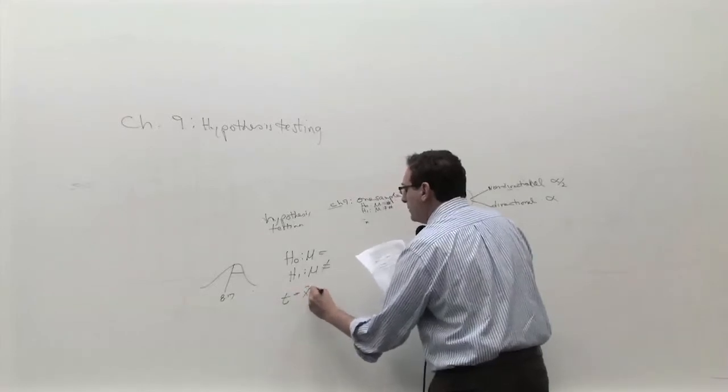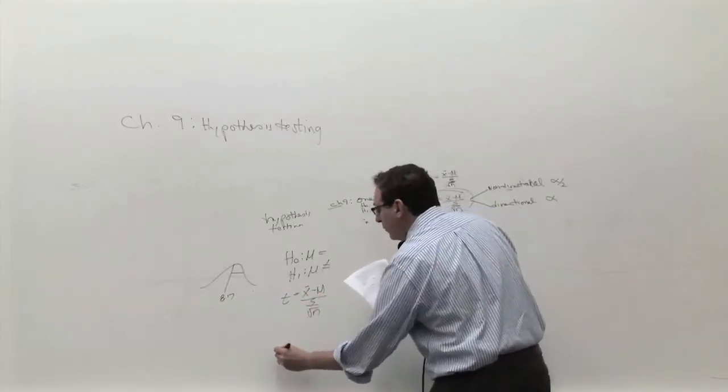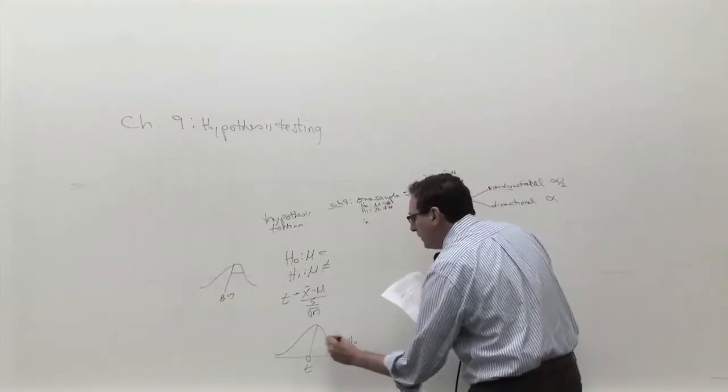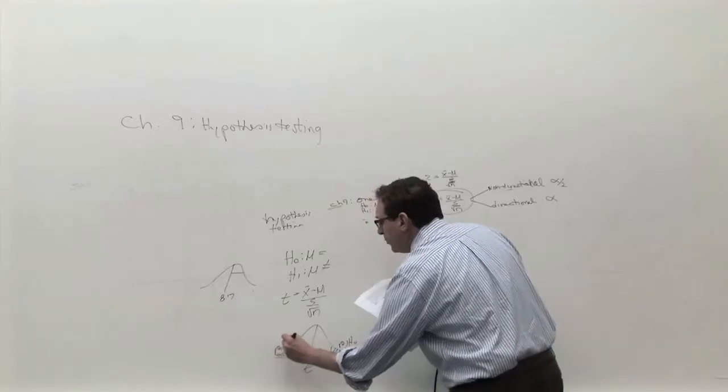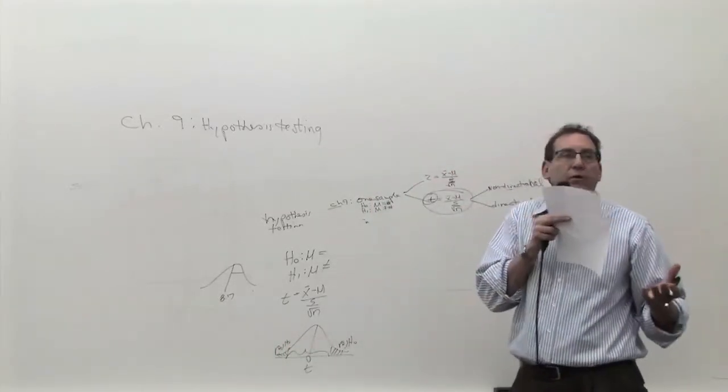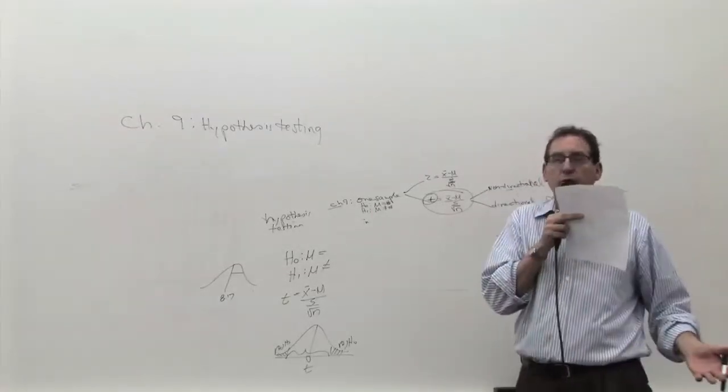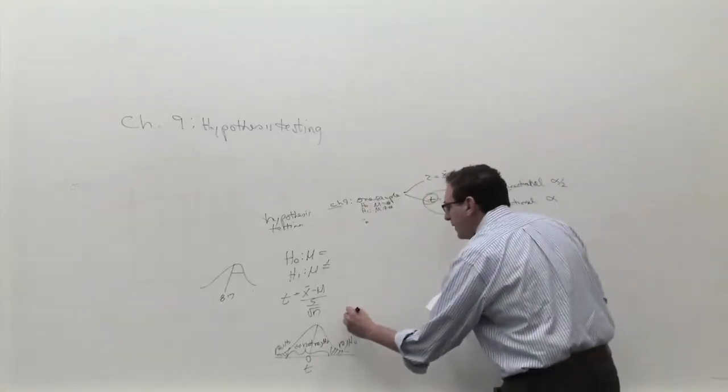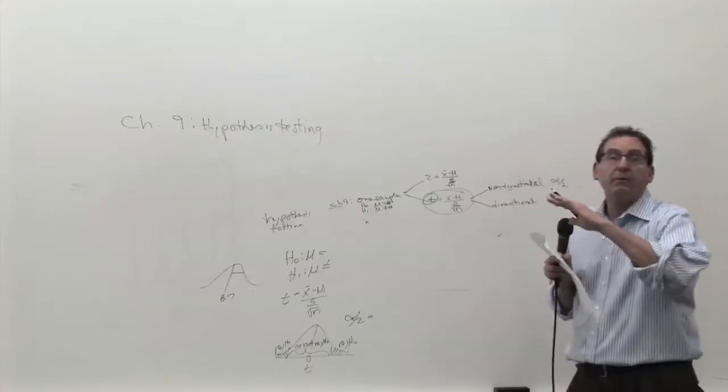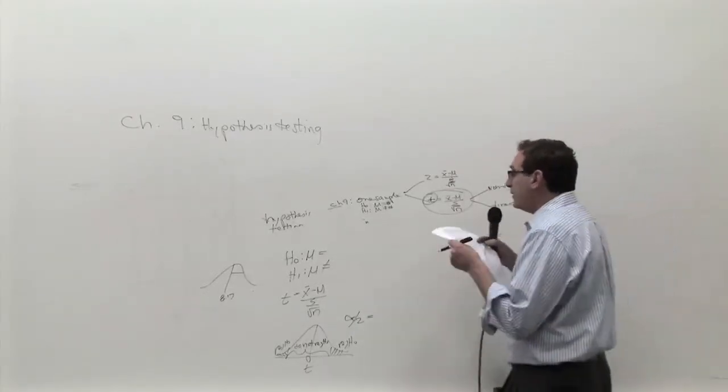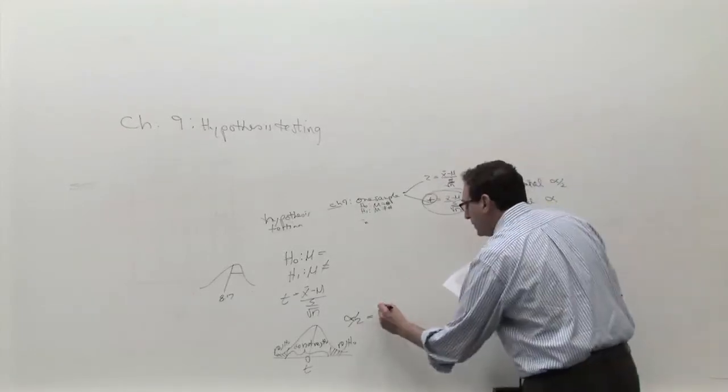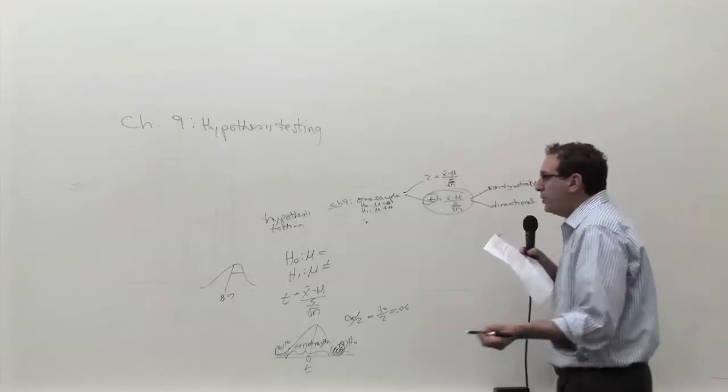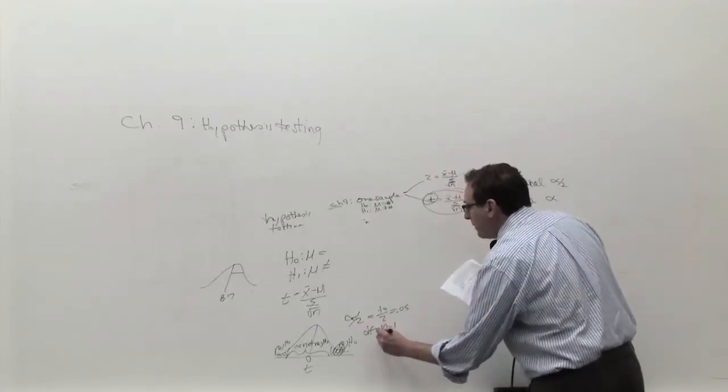Step number two is you plug numbers into the formula, which we'll do quickly. Step number three is you make a T-diagram, which starts out like that, with the rejection region if it's really positive or really negative. And at this point, I'm not going to go back and explain the whole logic of every step after you've learned it. This piece here is going to be 5% of the total area, and the degree of freedom is n minus 1 or 50 minus 1.